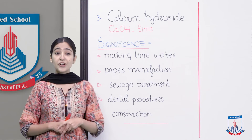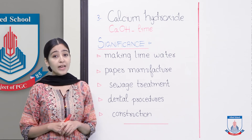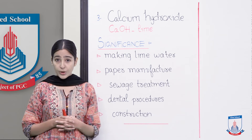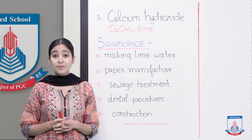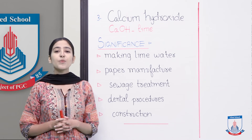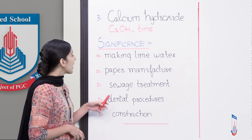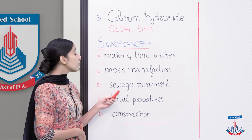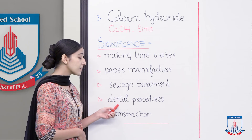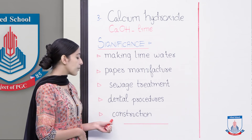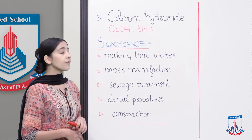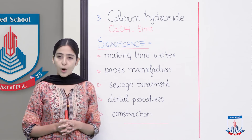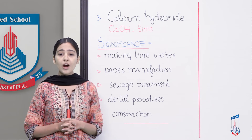The third and last example is calcium hydroxide, commonly called lime, with the formula Ca(OH)₂. Its uses include: making lime water, manufacturing paper, sewage treatment, dental procedures, and construction. Lime water is used in laboratories to detect the presence of carbon dioxide — when carbon dioxide bubbles into the water, it turns milky, detecting its presence.